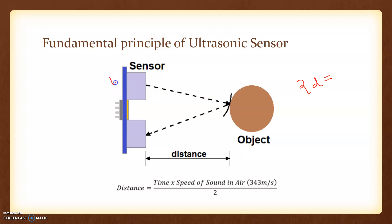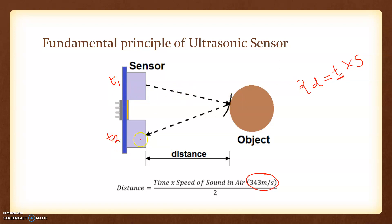So 2d distance is calculated as follows: suppose I send the signal from the transmitter at time t1 and I receive the reflected signal at time t2. The time gap t2 minus t1, let us call that t. So 2d equals t into the speed of sound in air, which is 343 meters per second. Therefore, the distance d is equal to t into s divided by 2 — that is, distance equals time into speed of sound in air, divided by 2.